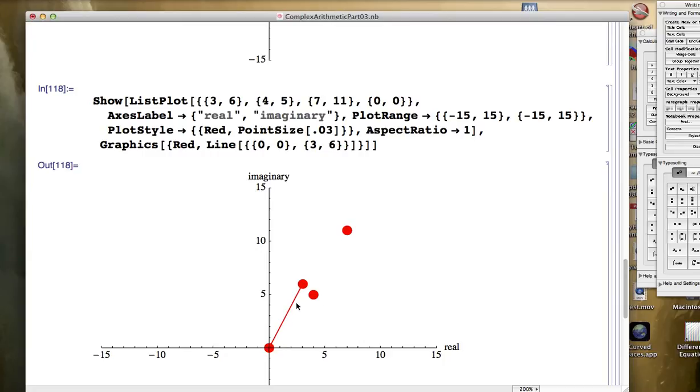And so we have the four dots there. Again, we've got the origin that represents the complex number zero. Zero plus zero i, if you will. You've got these two dots representing three plus six i up there and four plus five i there. And you've got their sum, seven plus 11 i up here. And then we've got this first line segment.